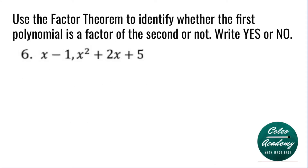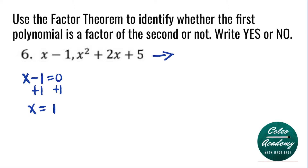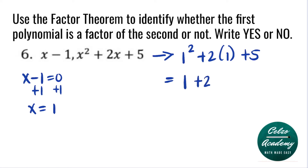Question number 6. Our first polynomial is x minus 1, so we will solve first for x. Adding 1 to both sides, our x value is equal to 1. To determine if x minus 1 is a factor, we will plug in 1 into x squared plus 2x plus 5. That becomes 1 squared plus 2 times 1 plus 5. Simplifying: 1 squared is 1, 2 times 1 is 2, plus 5.